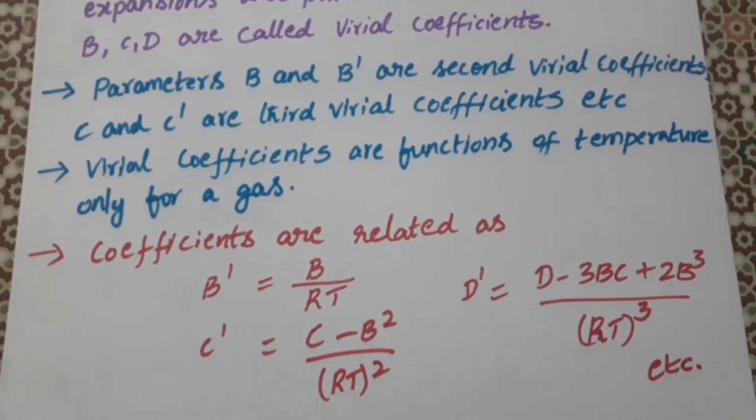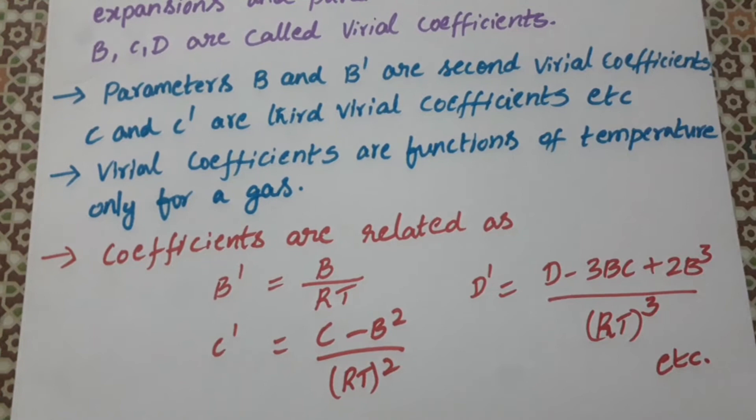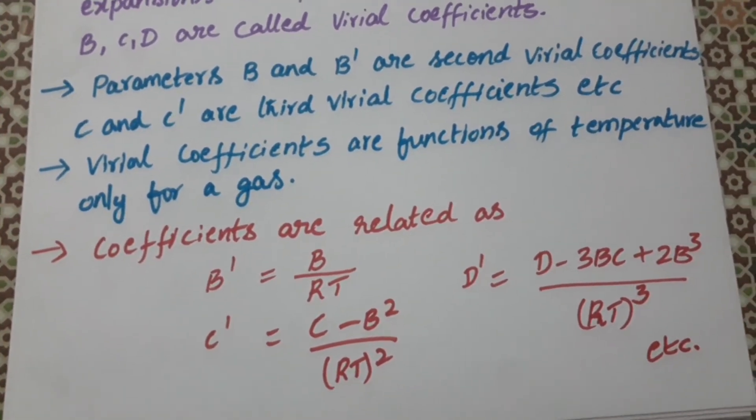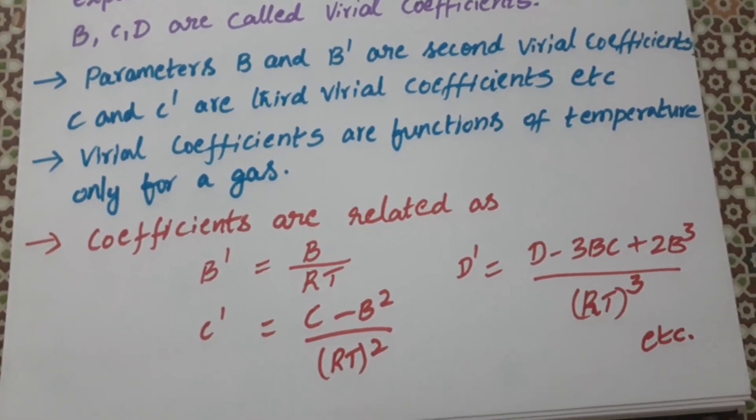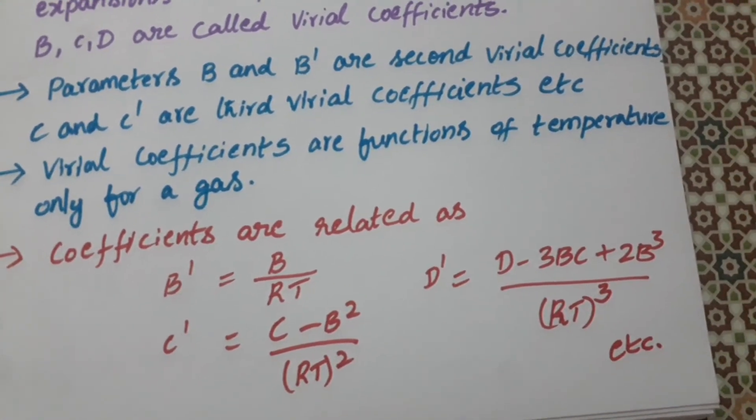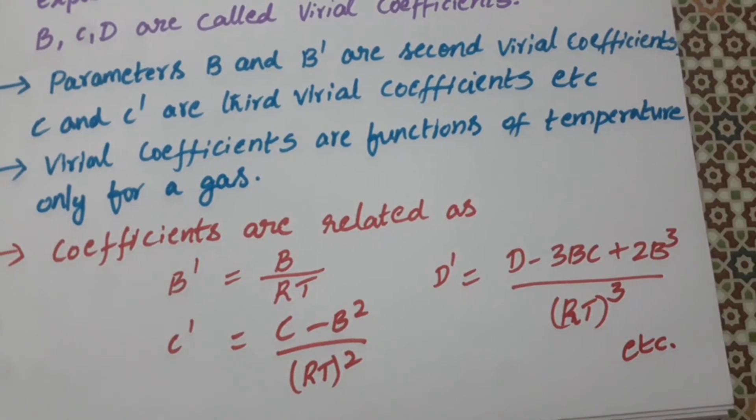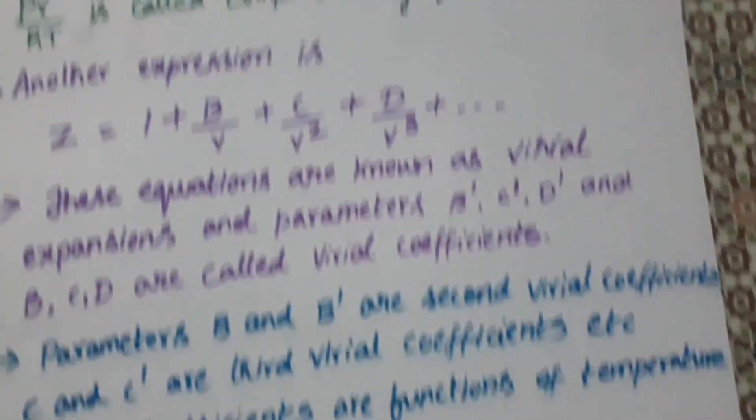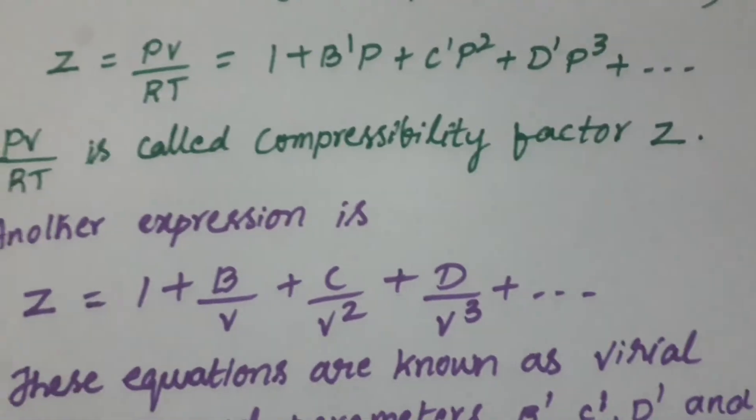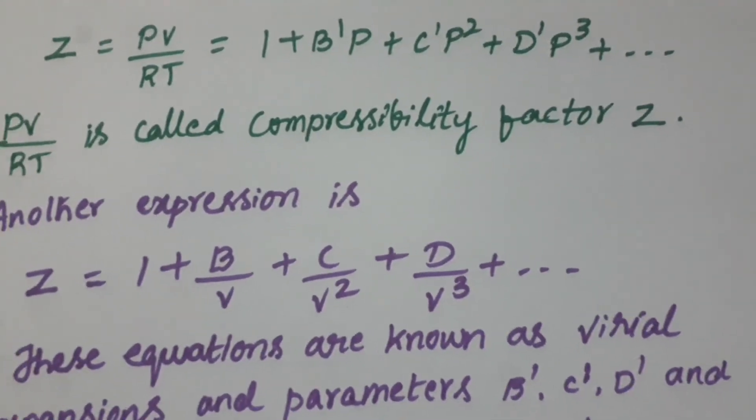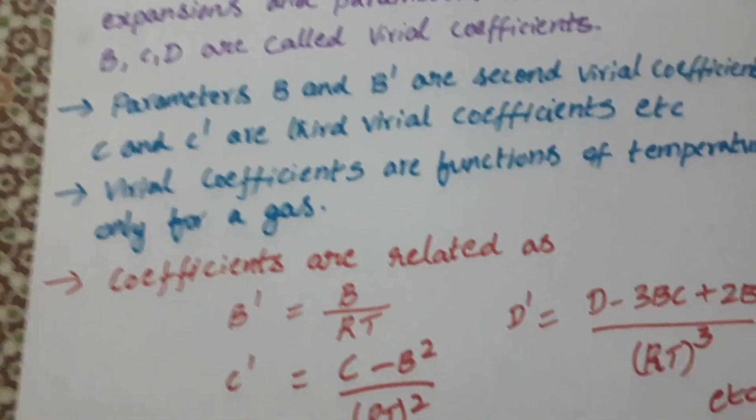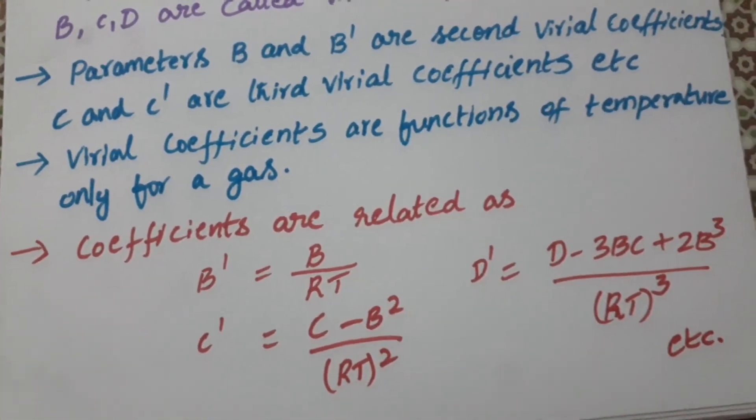So when you relate these coefficients, we can write these two coefficients as B' equal to B by RT, C' equal to (C minus B²) by (RT)². Similarly, D' equal to (D minus 3BC plus 2B³) by (RT)³. So when you substitute B in place of B', if we consider those two expressions, we can write these things as B' equal to B by RT.